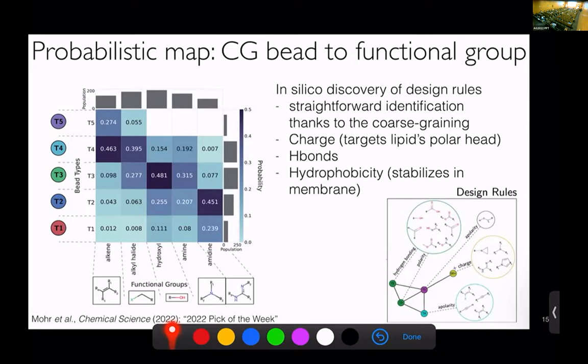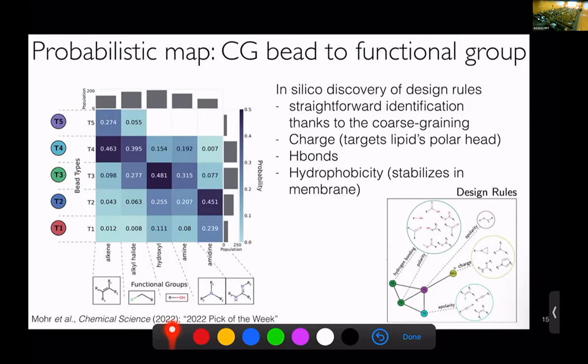You could say the job is done, except that if you want to propose a certain compound to be experimentally tested, then you'd have to probably synthesize that compound, and that's a problem. Instead what we do is we start from a chemical vendor database. We're going to filter it and then try to see which compounds most agree with the design rules that we've identified. This is something we did with this MQL database that provides a very nice API to obtain all the compounds that they can sell. We then end up with 22 compounds we've selected that were then tested experimentally.